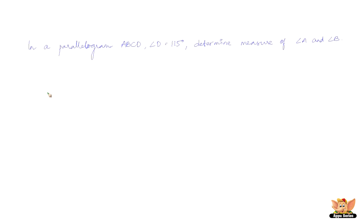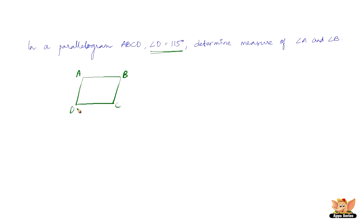Let us quickly solve another problem. In this problem, the question goes like this: We have a parallelogram ABCD in which angle D equals 115 degrees. We need to determine the measure of angle A and angle B. Let us draw the figure ABCD, which is a parallelogram. We know that AB is parallel to DC, and AD is parallel to BC. Angle D is given as 115 degrees.